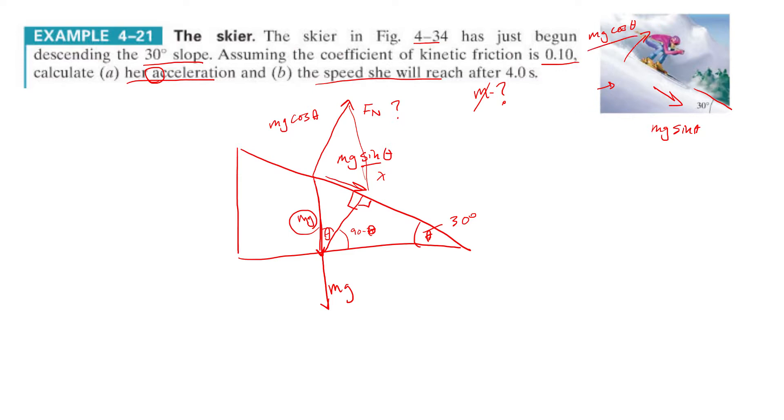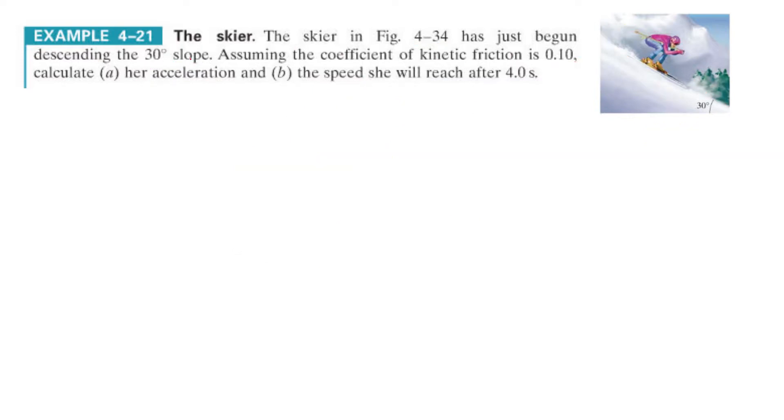And let's readdress this problem. So a skier has begun descending a 30 degree slope. We know that this is Mg. We know that this is going to be Mg sine theta. And we know that normal force is going to be Mg cosine theta, right? Assuming the coefficient of the kinetic friction is 0.1, calculate her acceleration.